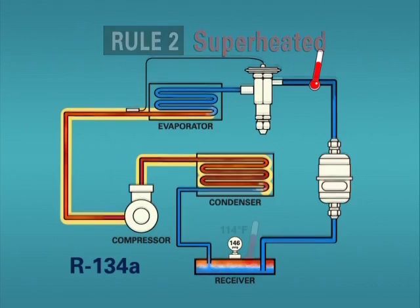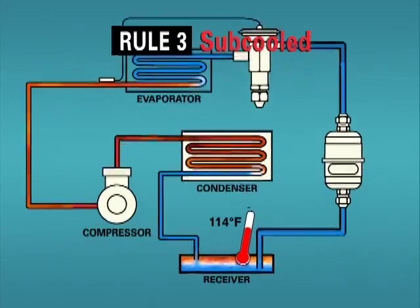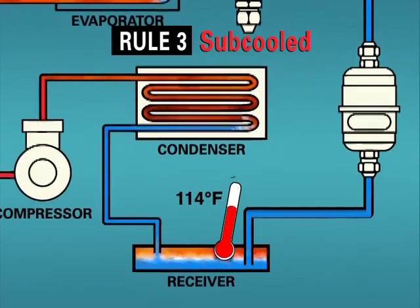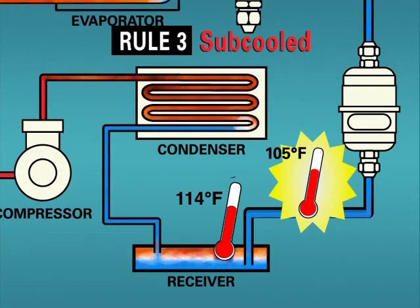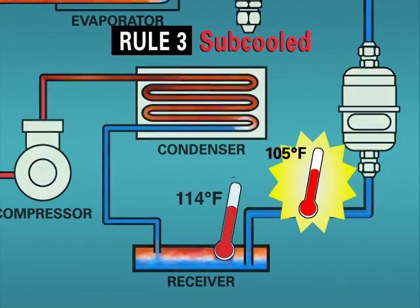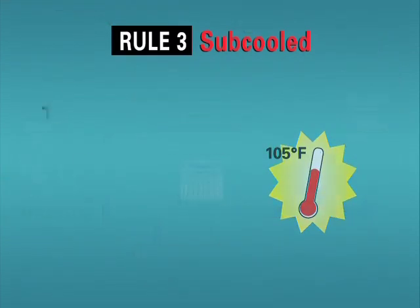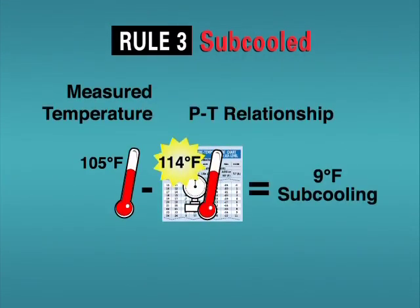Rule 3: We have subcooled liquid when our measured temperature is less than the saturation temperature indicated by our PT card. The amount of subcooling will be the difference in these two temperatures. Subcooled liquid will only be present in the liquid line which connects the condenser and evaporator coils of a normally operating system.